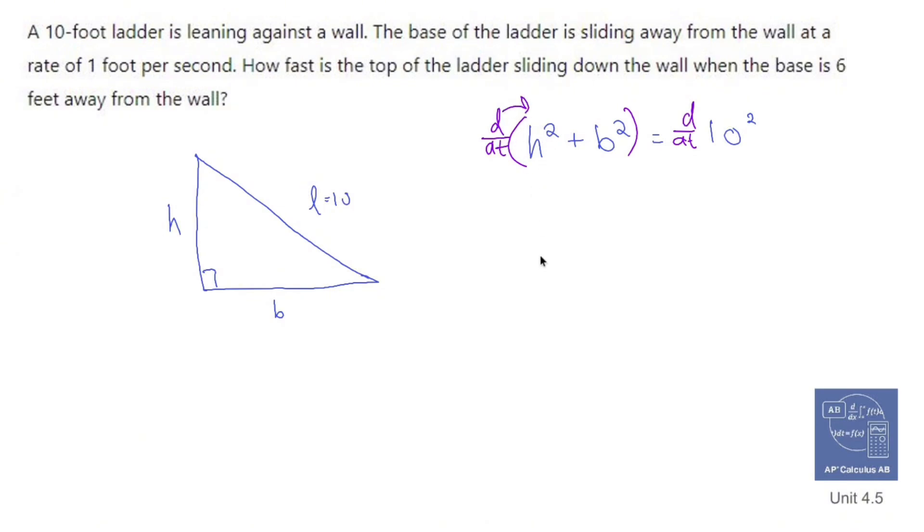So let's take the derivative of everything. The derivative of H squared with respect to T is 2HDHDT. The derivative of B squared is very similar to BDBDT. The derivative of 100 is 0. That's nice.